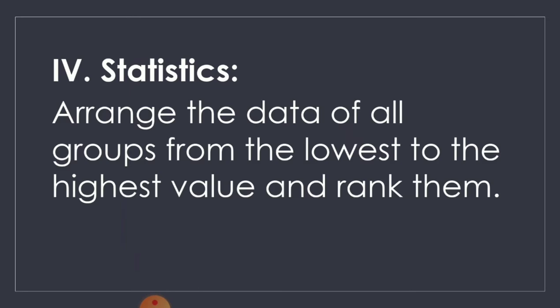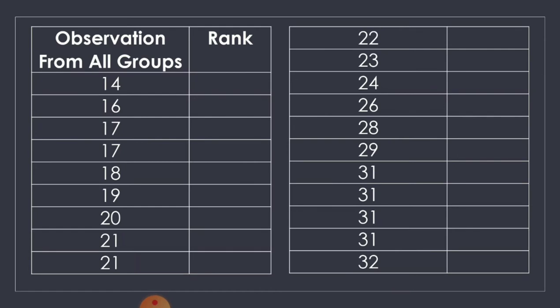For the statistics, first we need to arrange the data of all the groups from the lowest to the highest value and rank them. We have a table showing the observations from all groups arranged in ascending order. The lowest value is 14, followed by 16, then 17, another 17, 18, 19, 20, 21, another 21, 22, 23, 24, 26, and so on.